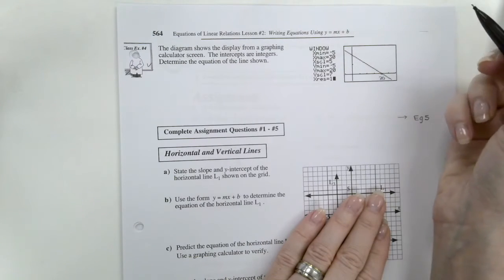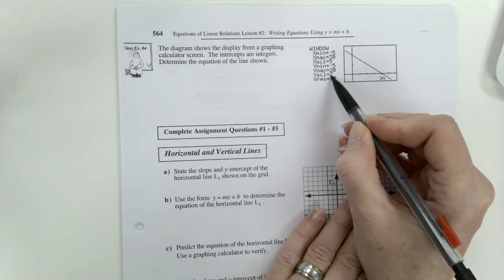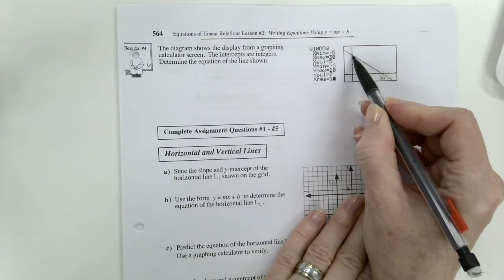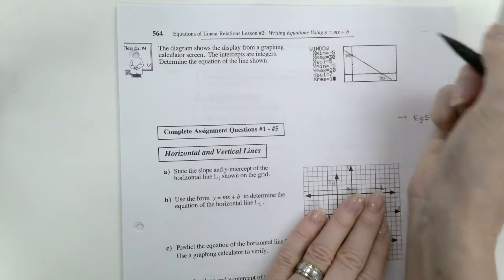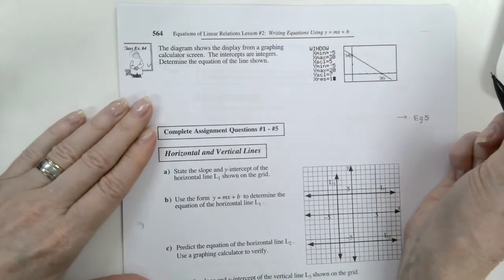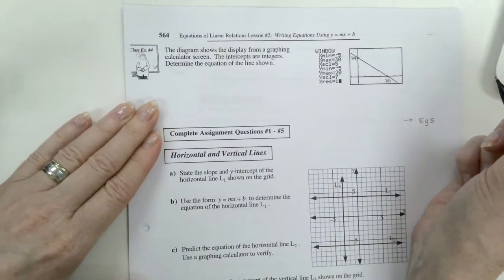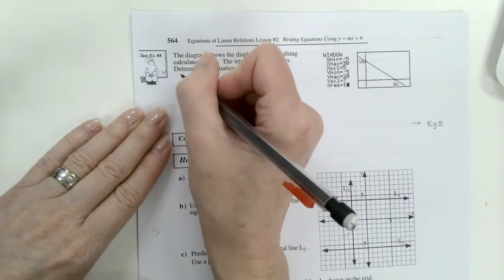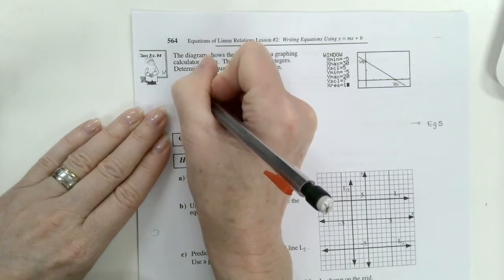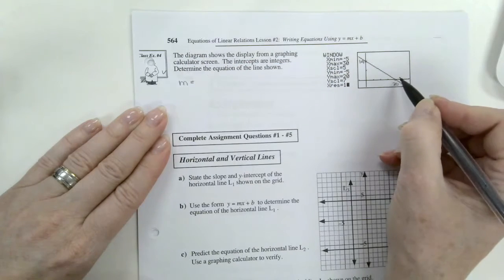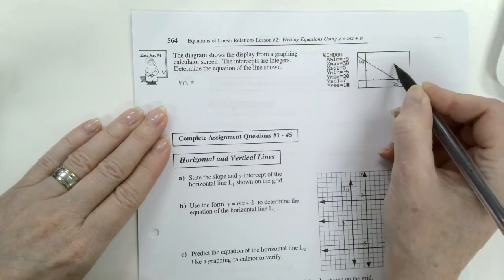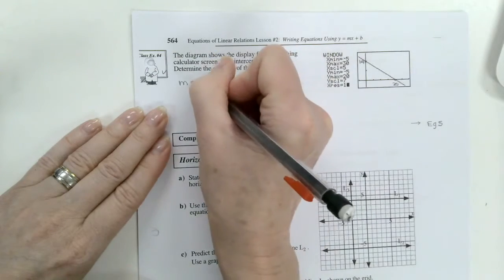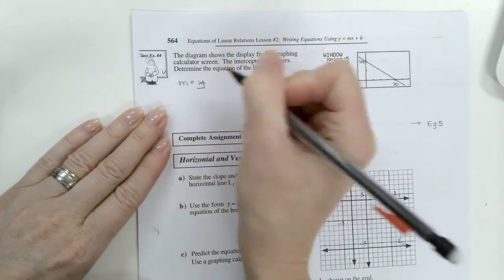And on the y, y is going up by 7. So 7, 14. And now let's do our equation. So m is going to be rise. So if I start here, rise of 14. Over, run.